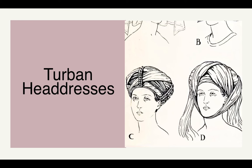Turban headdresses become more popular towards the end of the earlier half of the era. They're padded rolls of silk or velvet, decorated with pearls and jewels if you had the money. A veil was usually draped over the top and could either be left loose or wrapped around the chin.